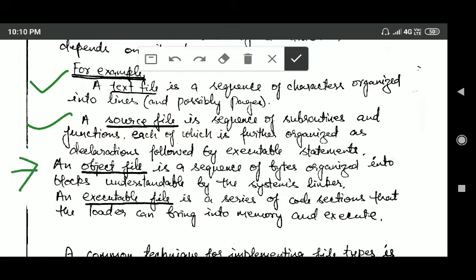An object file is a sequence of bytes organized into blocks understandable by the system's linker. An executable file is a series of code sections that the loader can bring into memory and execute.